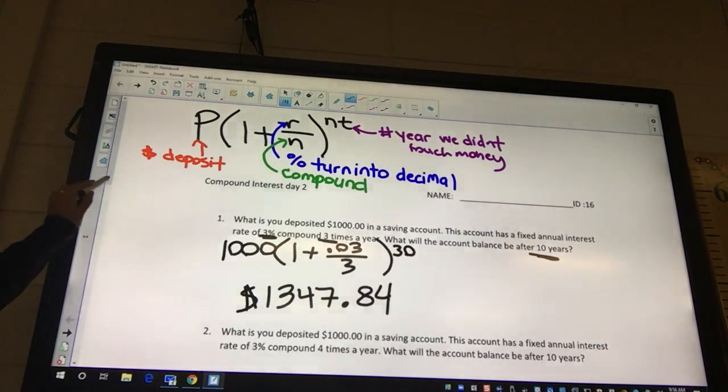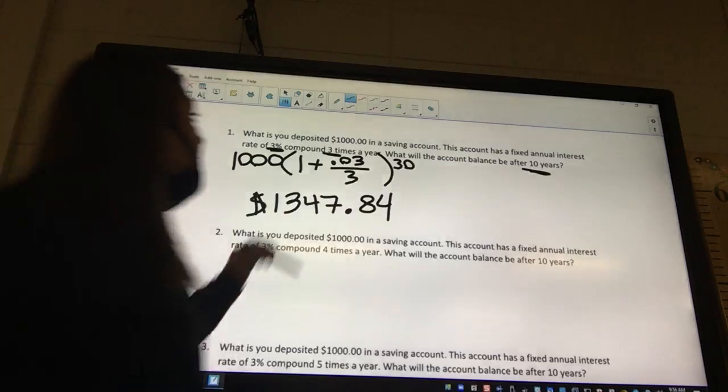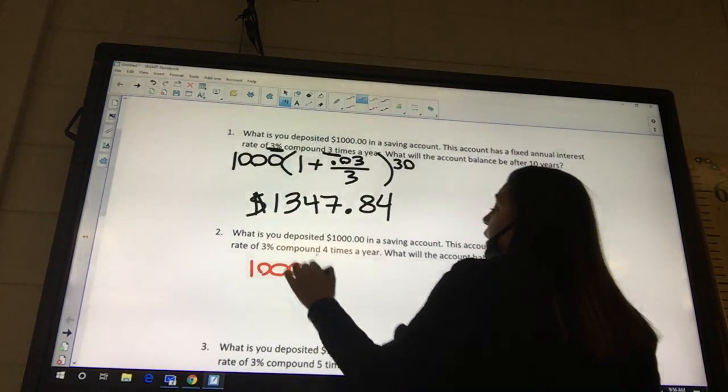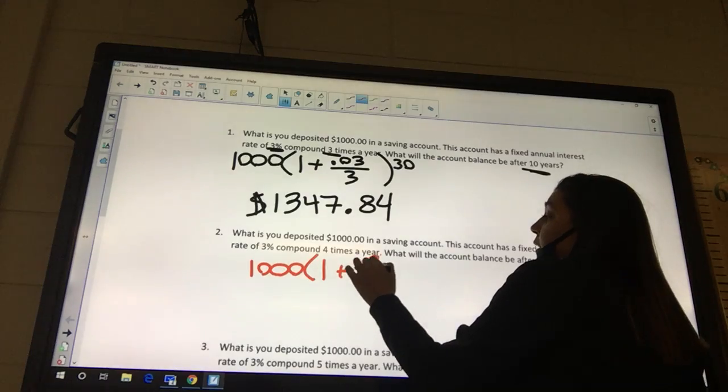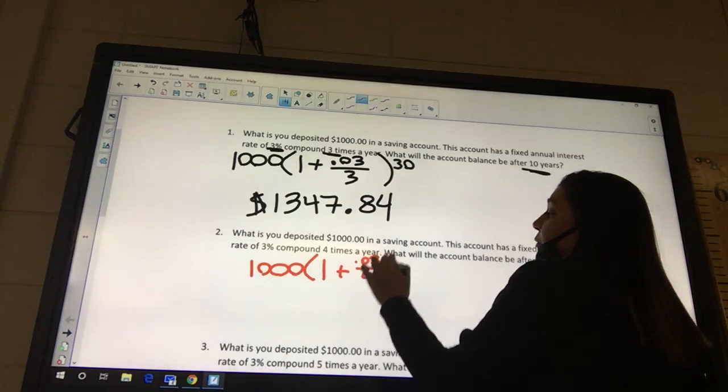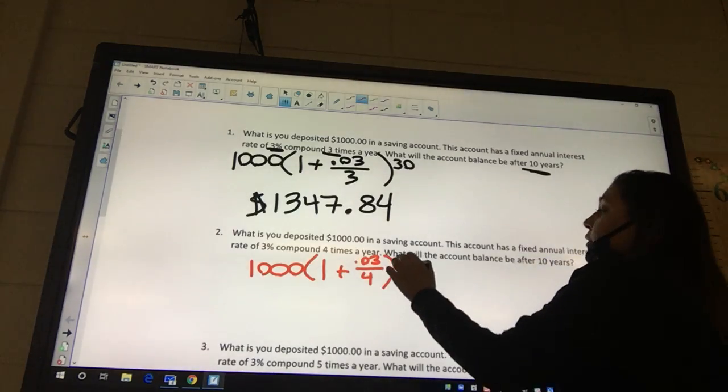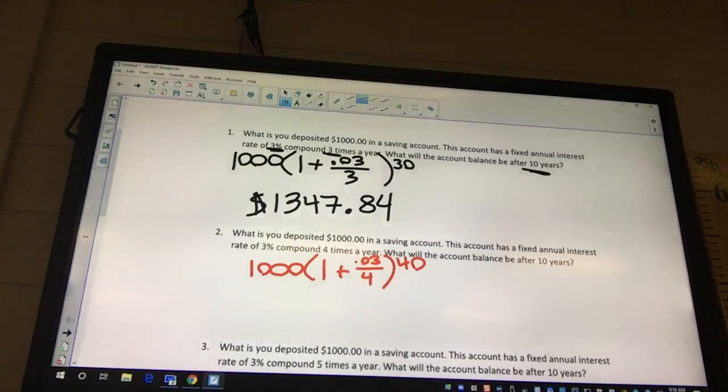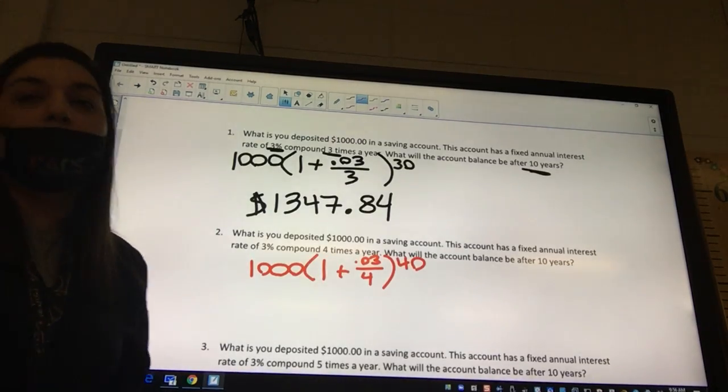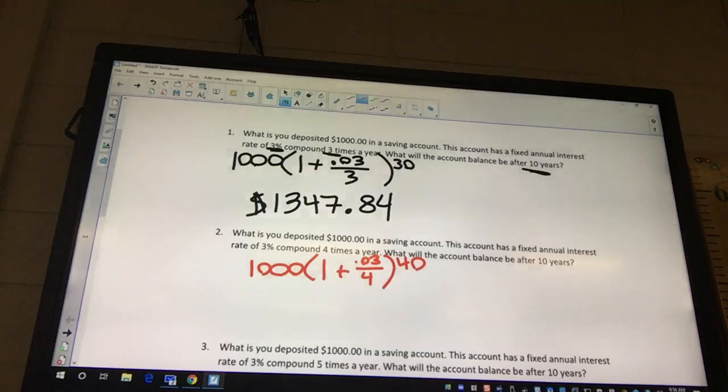So let's see this other one. You deposited $1000 this time, and we got 1 plus our interest rate is still 3%, but we compounded 4 times a year. So you're gonna have 40 out here instead. You're fine, okay? See what you get. With those calculators, you don't have to erase everything, you can just go back and edit the few numbers. So don't erase it every time.